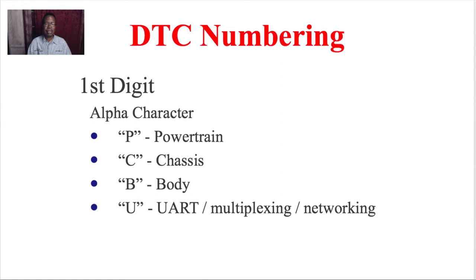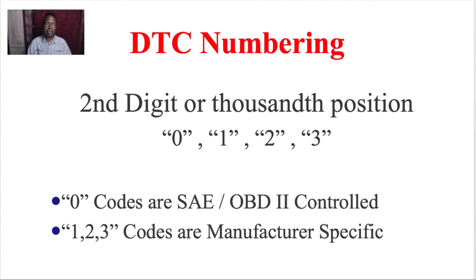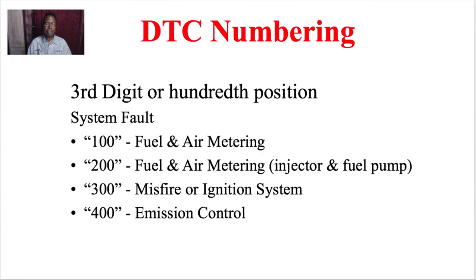For DTC numbering: the first digit indicates the system — P for powertrain, C for chassis, B for body, U for multiplexing network. The second digit indicates generic (0) or manufacturer-specific (1, 2, or 3). The third digit indicates the system at fault: 100s are fuel/air metering, 200s are injector/fuel pump, 300s are misfire/ignition, 400s are emission controls — for example, P0404 is an emission control system code.